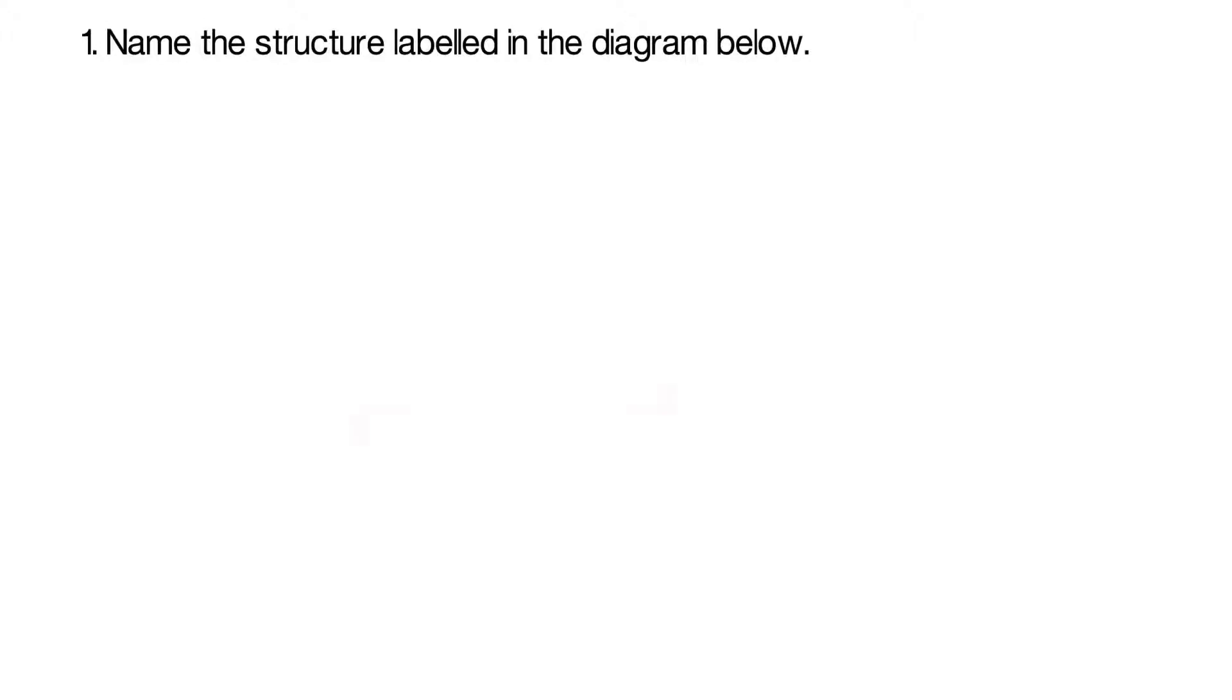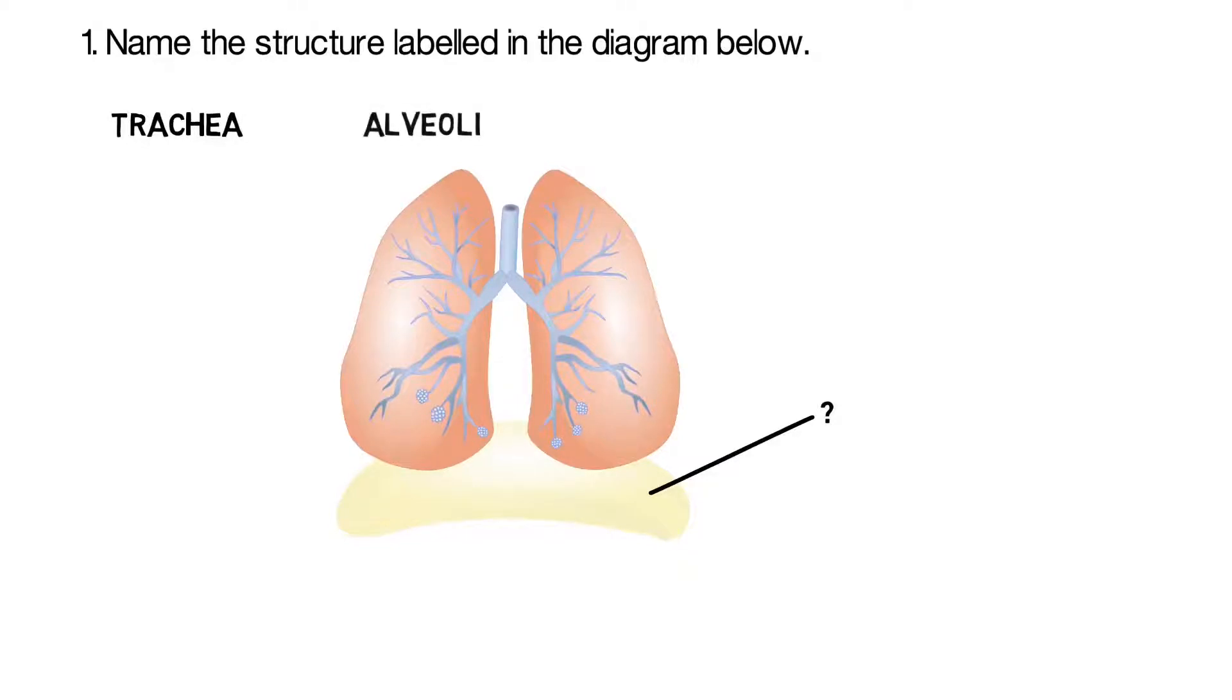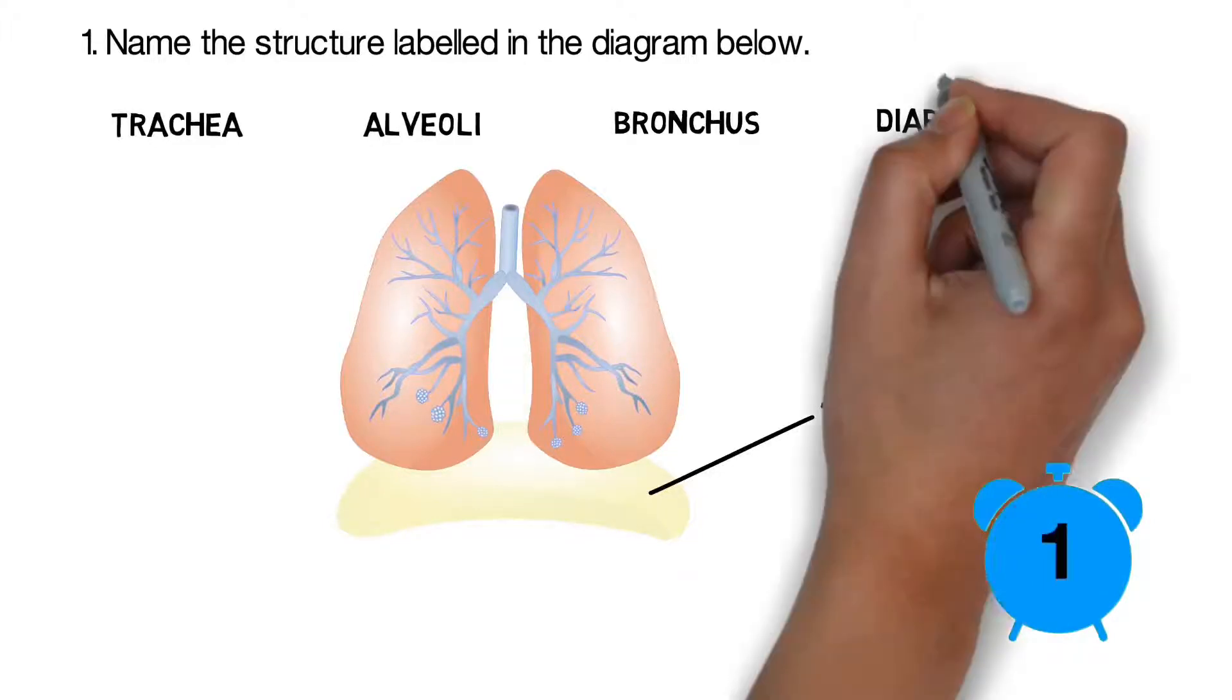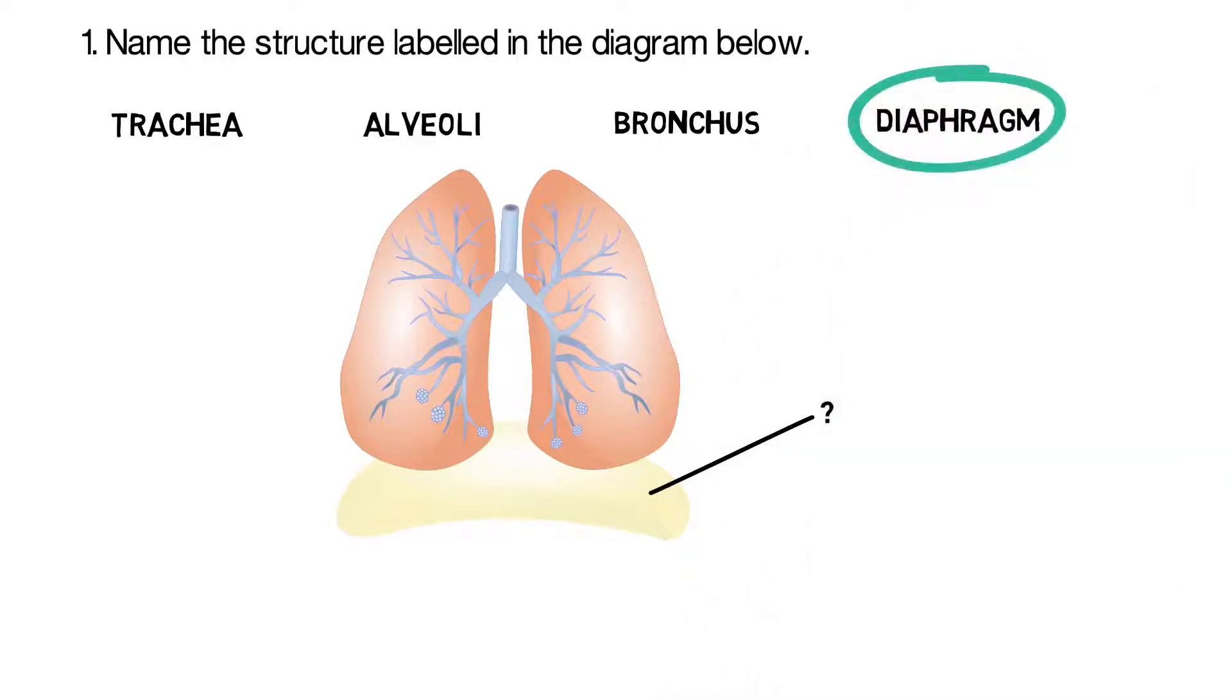Question number one: name the structure labeled in the diagram below. Is it the trachea, is it the alveoli, is it the bronchus, or is it the diaphragm? The answer is the diaphragm.